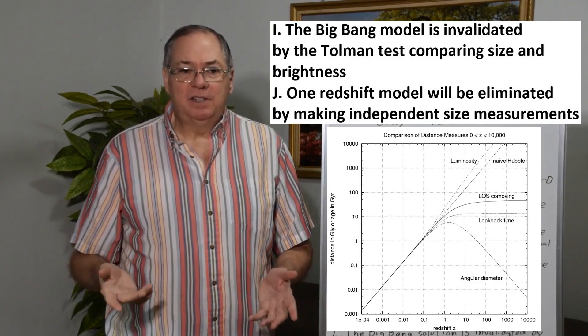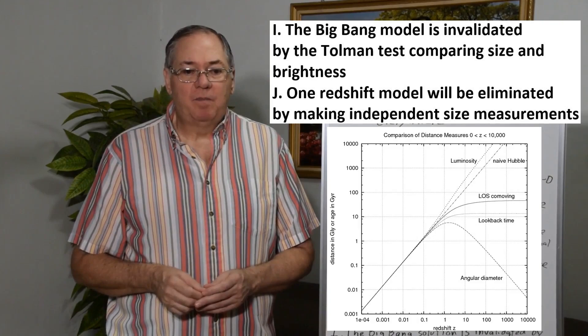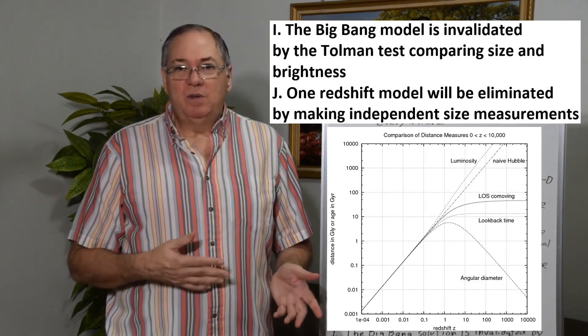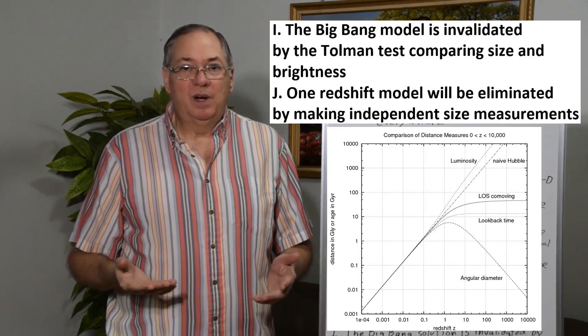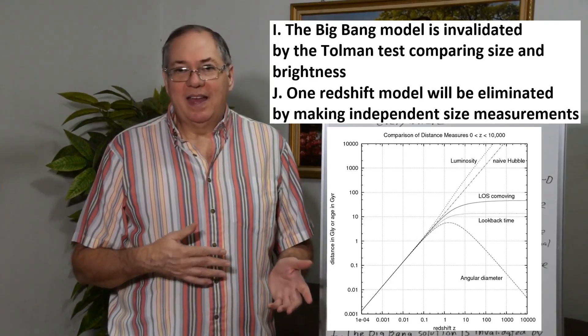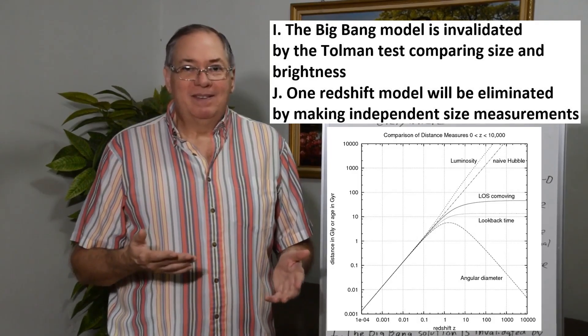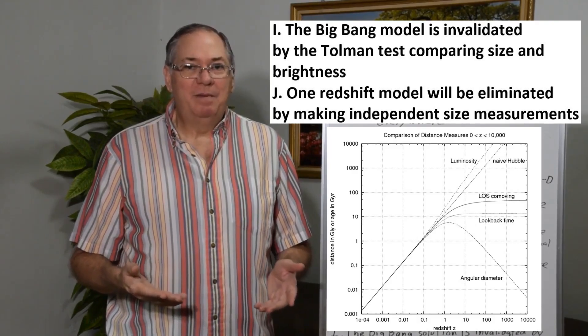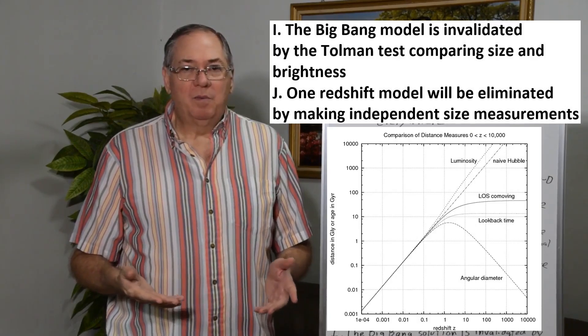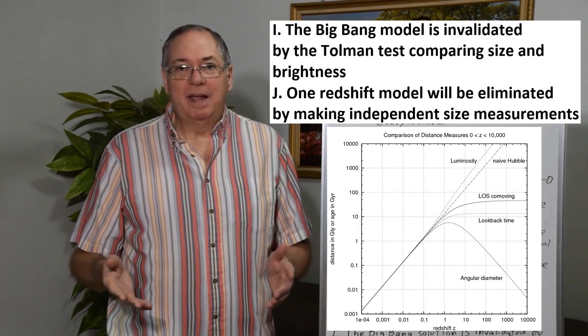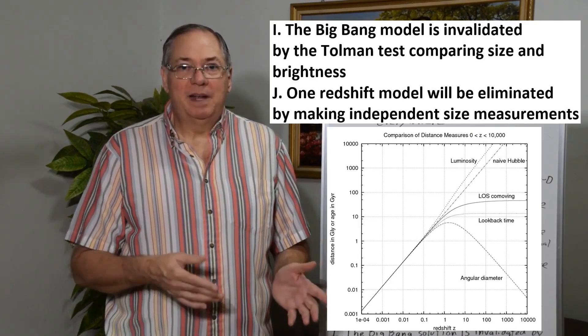But in short, I think that Z equals 100 to 300 is possible. Somewhere in the 1,000 to 3,000 billion light years away may be observable. We'll just have to see what detectors we develop and if they're big enough and can gather enough light to make those measurements.